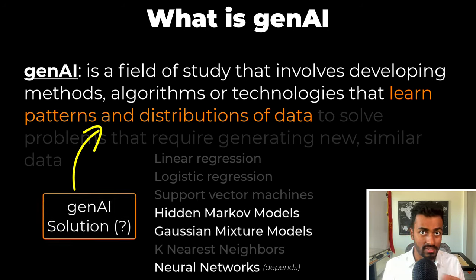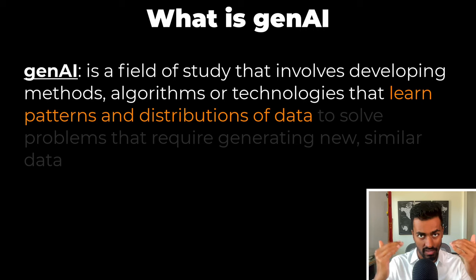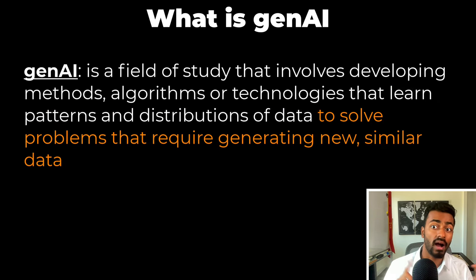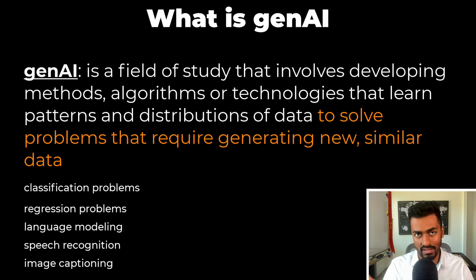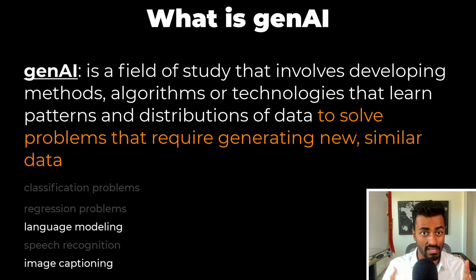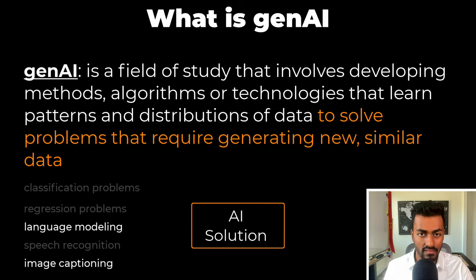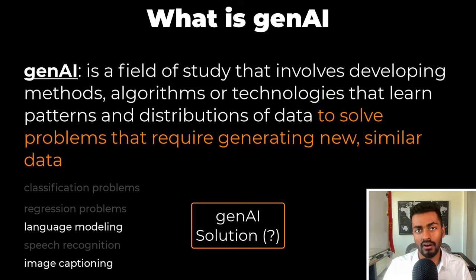Coming back to our definition: Gen AI is a field of study that involves developing methods, algorithms, or technologies that learn the patterns and distributions of data to solve problems that require generating new or similar data. There is a set of problems that can be solved in the AI space, but only a subset of these will generate new and similar data. So depending on the problem being solved, the solution may or may not fall into the realm of Gen AI. I hope this definition is now more clear.